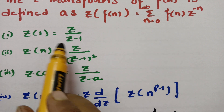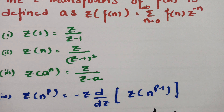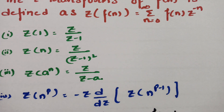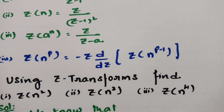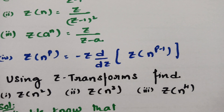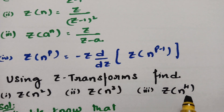Using these four standard functions, I am going to solve the most important questions from Z transforms. The repeatedly asked questions are: using Z transforms, find Z of n square, Z of n cube, and Z of n to the power 4.